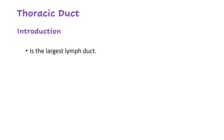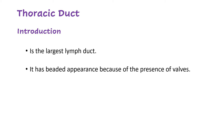What exactly is the thoracic duct? It is a lymphatic duct — in fact it is the largest lymph duct, draining lymph from most parts of the body. It has a beaded appearance because of the presence of valves. These valves prevent backflow of lymph, which flows against gravity when the person is in an upright position.